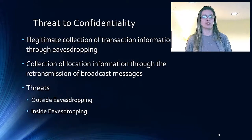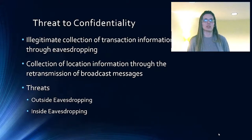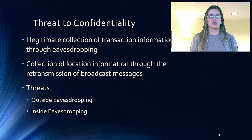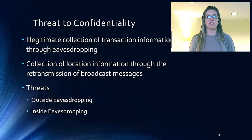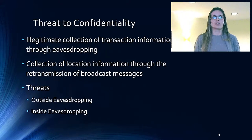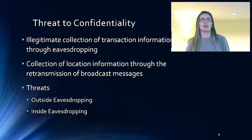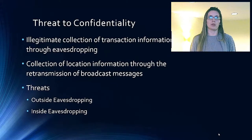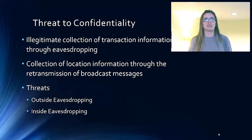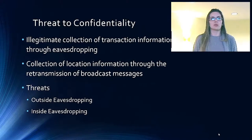Finally, we have threats of confidentiality. With messages exchanged between nodes of a vehicular network being accessible over the air, the threats of confidentiality include the illegitimate collection of transaction information through eavesdropping and the collection of location information through retransmission of broadcast messages. Outside and inside eavesdropping are two threats of confidentiality. Broadcast messages generally pertain to traffic safety information and are therefore uninteresting for outside eavesdropping. When it comes to inside eavesdropping, as long as insider nodes collect information in keeping with the terms of an agreement with the user, there is no problem.